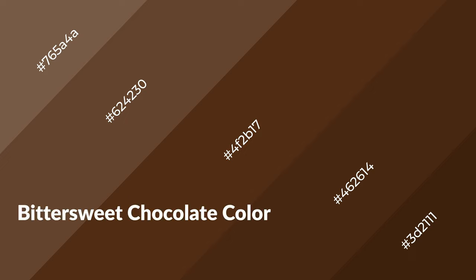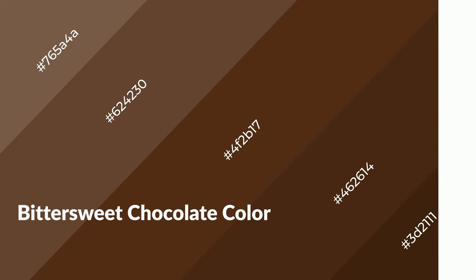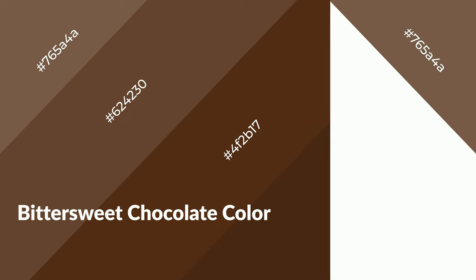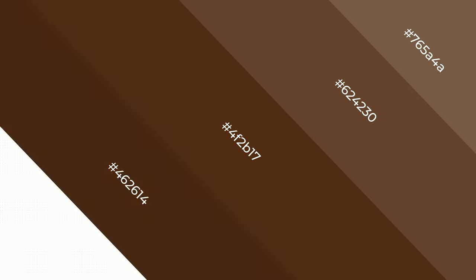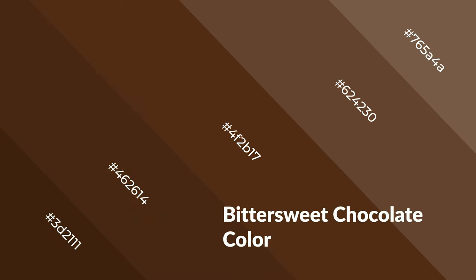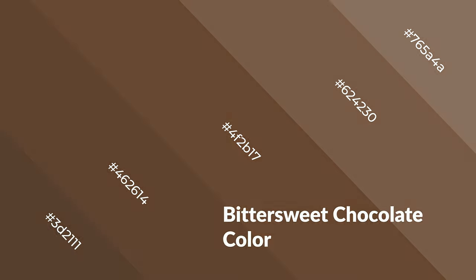Bittersweet chocolate is a warm color and it emits cozier and active emotions. Warm colors are symbols of warmth, fire, heat, and sunshine. It also evokes joy, passion, love, and even anger. You can see these colors used in restaurants and gyms.